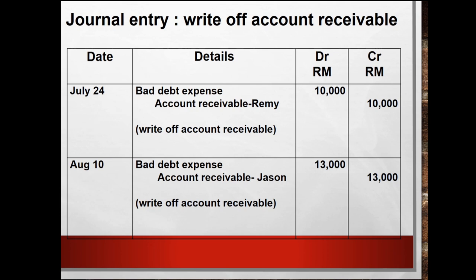And the second transaction, 10 August: debit bad debt expense RM13,000 and credit accounts receivable — Jason RM13,000. This will reduce the amount of accounts receivable, writing off accounts receivable for both Remy and Jason.